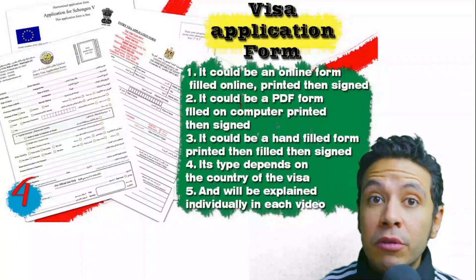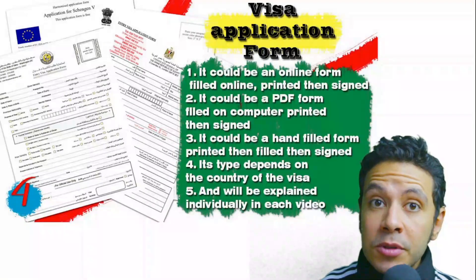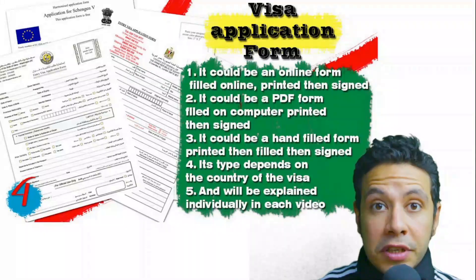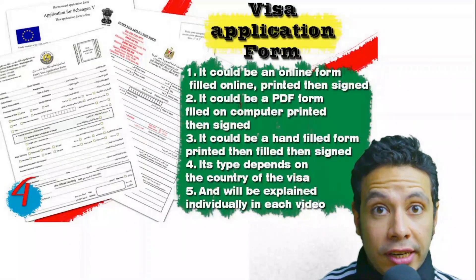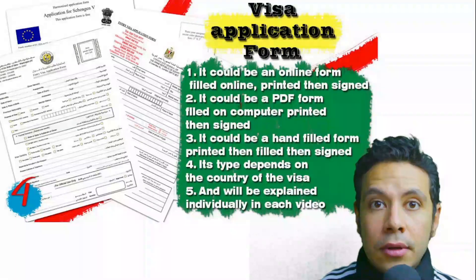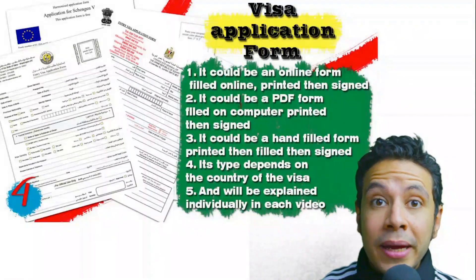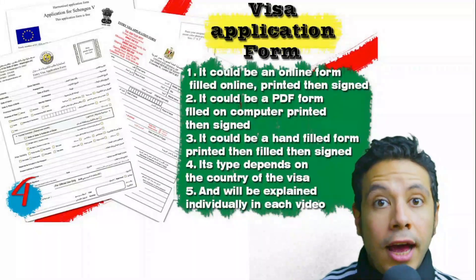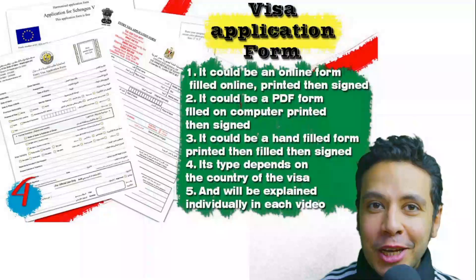For the visa application form, you generally need only one copy, but sometimes two or three copies are required. Forms differ from country to country. In general you print and fill it manually, but many countries now offer online application platforms where you fill it out and then print and sign it.